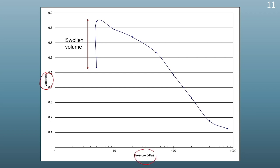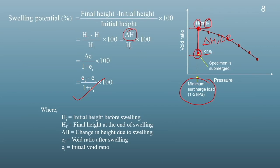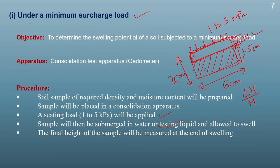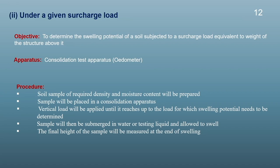If we draw this on an E log P graph, the initial condition is before swelling. At the point water is added, there is an increase in volume and the swelling process starts, finally stopping at the swollen void ratio. This del E or del h indicates the swelling potential of the soil. Since we are applying a minimum surcharge load of 1 to 5 kPa, this method is called swelling potential under a minimum surcharge load. This method is applicable when there is no surcharge present on the soil.